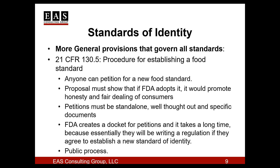FDA must develop a petition response. If they believe there's merit to the petition, they may publish a notice in the Federal Register asking for the public to comment on the establishment of the new standard. If this process continues, FDA would draft and publish a notice of proposed rulemaking. Once this is published in the Federal Register, the public would again get to comment. And once FDA considers the comments, they would then publish a final rule. As you can imagine, this process can take years to be completed.